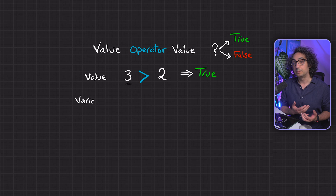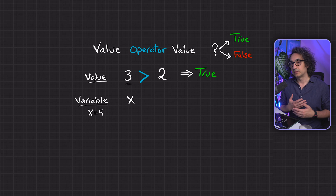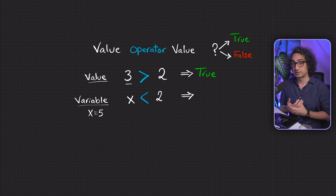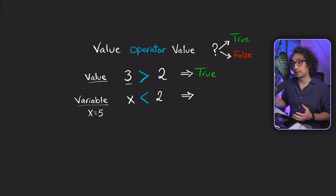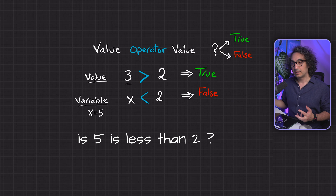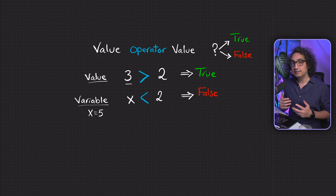Of course you can compare not only direct values but also variables. For example, if you have a variable x assigned the value five, you can compare the variable with a value using an operator like less than — we are asking 'is x less than two?' Python gets the value five and compares it with two. Since five is not less than two, Python returns false.